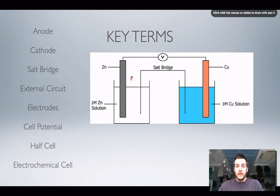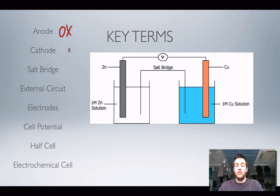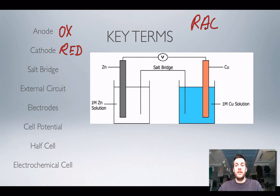Defining what an anode and cathode are is not all that important, but it is important to remember that oxidation always takes place at the anode and reduction always takes place at the cathode. RAC is one way of remembering this — reduction at the cathode. The important thing is that you can determine which electrode is which by looking at where reduction and oxidation are taking place.